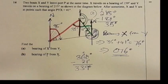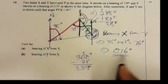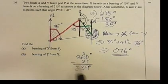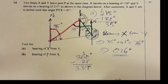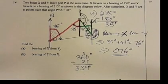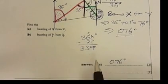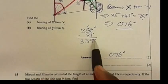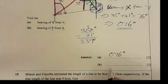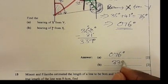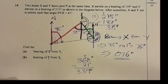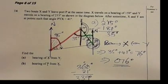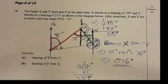Since this is an exam question, here are the final answers. For part (a), the bearing of X from Y is 076 degrees. For part (b), the bearing of P from X is 339 degrees. That's how you solve problems involving bearings. I encourage you to subscribe to this channel and also leave a comment.